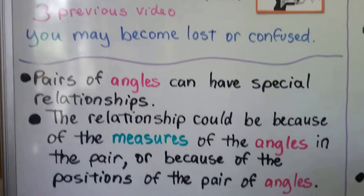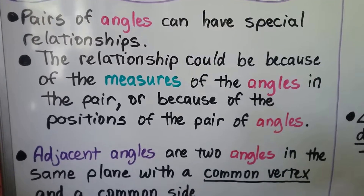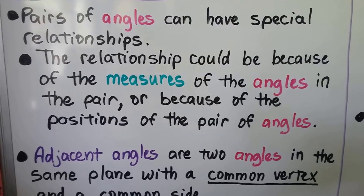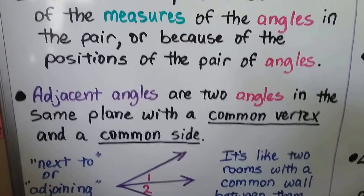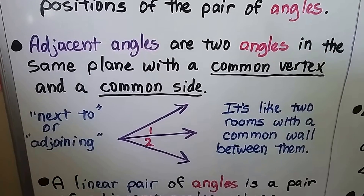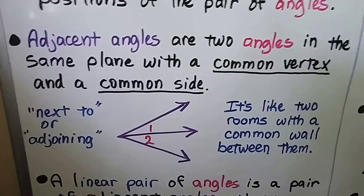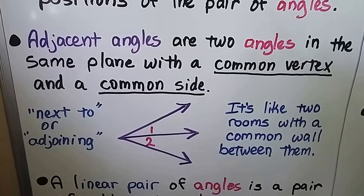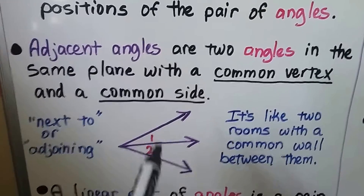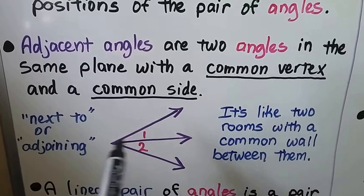Pairs of angles have special relationships. The relationship could be because of the measures of the angles in the pair, or because of the positions of the pairs of angles — how the angles are situated with each other. Adjacent angles are two angles in the same plane with a common vertex and a common side. Adjacent means next to, or adjoining. It's like two rooms with a common wall between them.